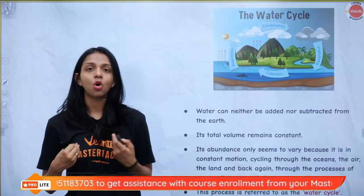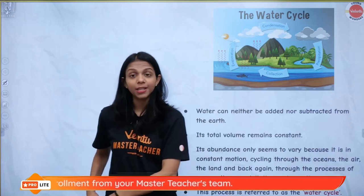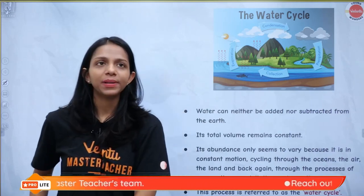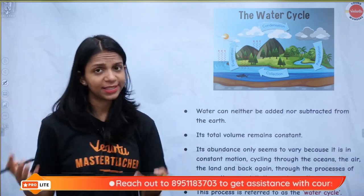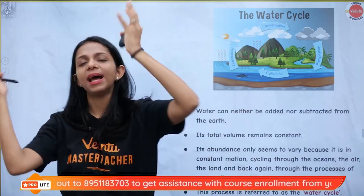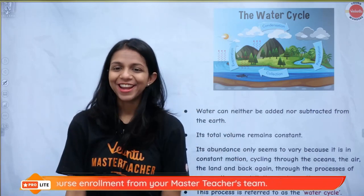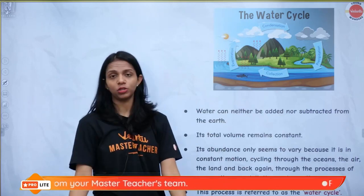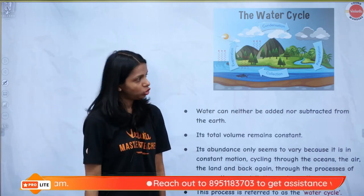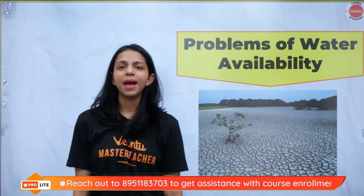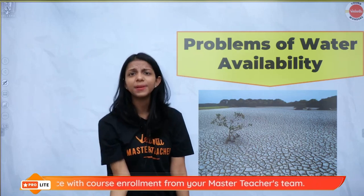Water is always constant on our planet — it is not like every ten years, aliens come and give us more water. The same water that existed on our planet billions of years ago exists today. It evaporates, becomes clouds, and comes back as rain, sleet, or snow. Because of this water cycle, we call water a renewable resource, because it is renewed. So why do we say there is scarcity of water if it's a renewable resource?